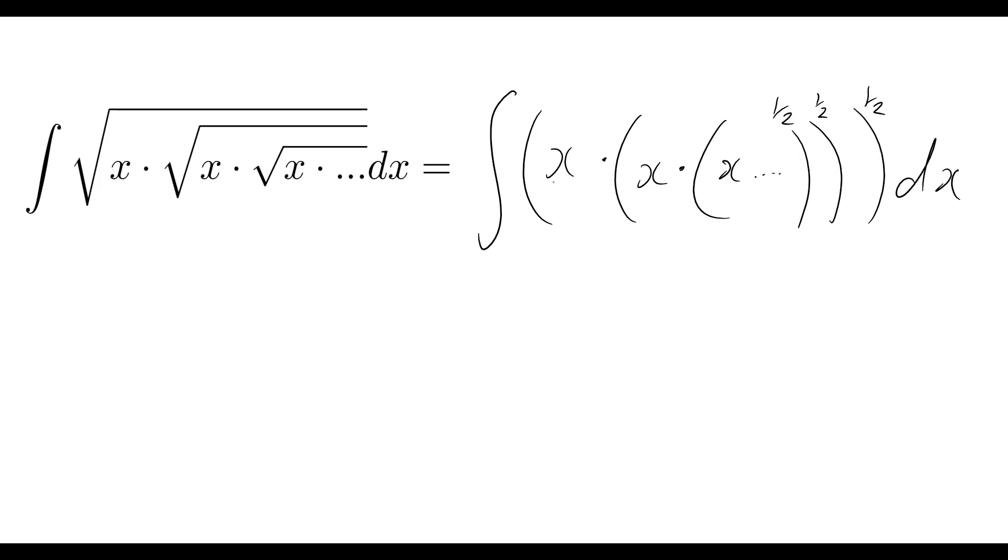So what's going to happen on the outermost x term? That's going to be x to the power of one half. For the second x term it's going to be the half times by the half, so that's one quarter. It becomes x to the half times by x to the quarter. For the next one, a half times a half times a half becomes x to the one on eight.